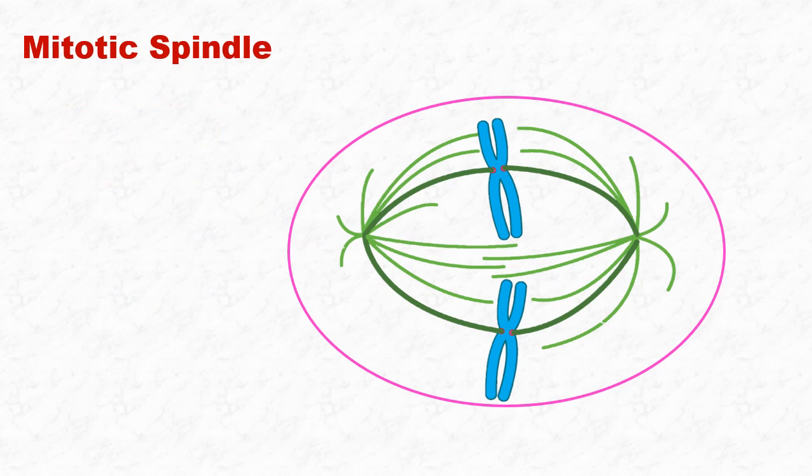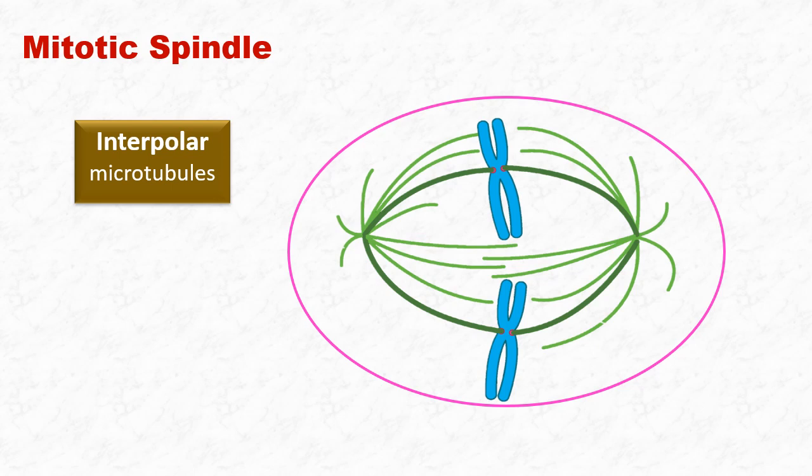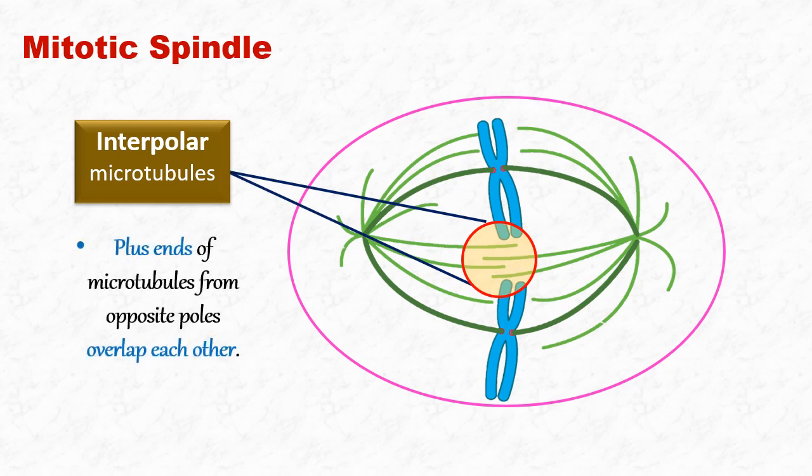The second type of microtubules are known as interpolar microtubules. As you can see in the image, the plus ends of some microtubules are overlapping with the plus ends of microtubules from the other pole. These microtubules overlapping with each other in the mid-zone of spindle are called the interpolar microtubules.